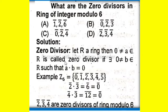Solution: Zero divisor - let R be a ring, then 0 ≠ a ∈ R is called zero divisor if there exists 0 ≠ b ∈ R such that a·b = 0.